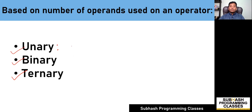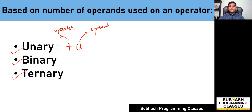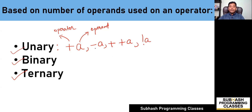Now what do you mean by unary operators? Those operators on which only one operand would be used, or those operators which operate only on a single operand, are called as unary operators. For example, '+a' — here plus is an operator and 'a' is an operand. Examples include unary plus '+a', unary minus '-a', increment '++a', or logical not '!a'. These operators are operating only on a single operand, and therefore you can call them as unary operators.